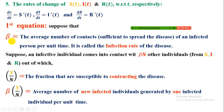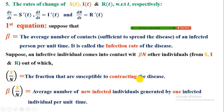To derive the first equation of the SIR model, let us define beta. Beta is the average number of contacts sufficient to spread the disease made by an infected person per unit time — also called the infection rate. Suppose an infected individual contacts β·N total other individuals from categories S, I, and R. Out of these, S/N is the fraction that are susceptible, so β·(S/N) is the average number of new infections generated by one infected individual per unit time.